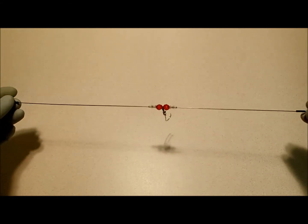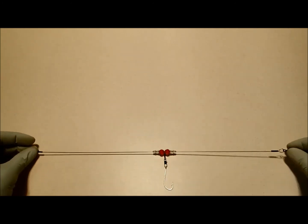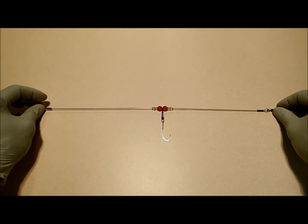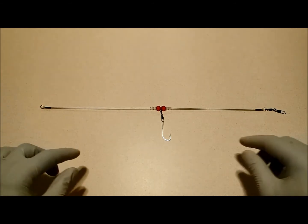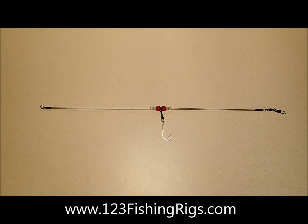We have several versions of this rig available. We have single hook versions, we have multi hook versions, and we even have some with colored beads such as you see here before us. If you have any questions, come check out our website at www.123fishingrigs.com. You can even drop us an email using the contact us page on that website.